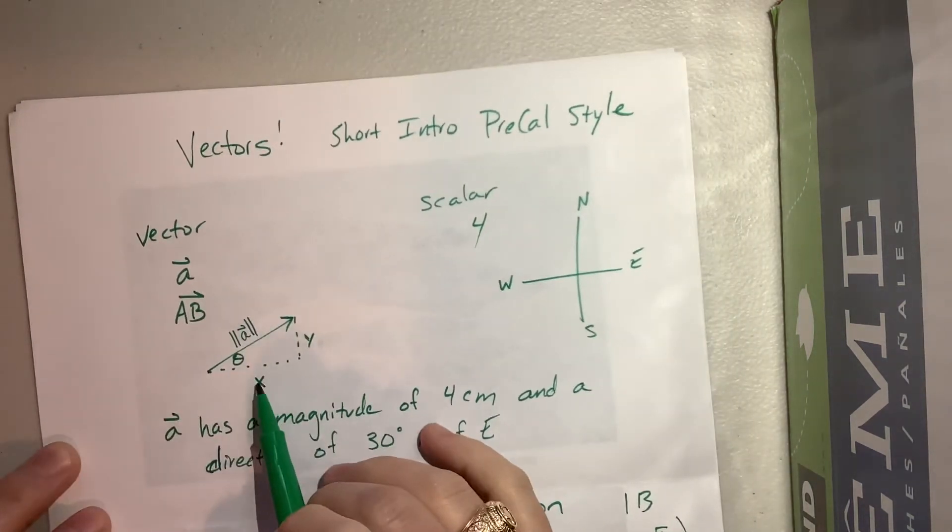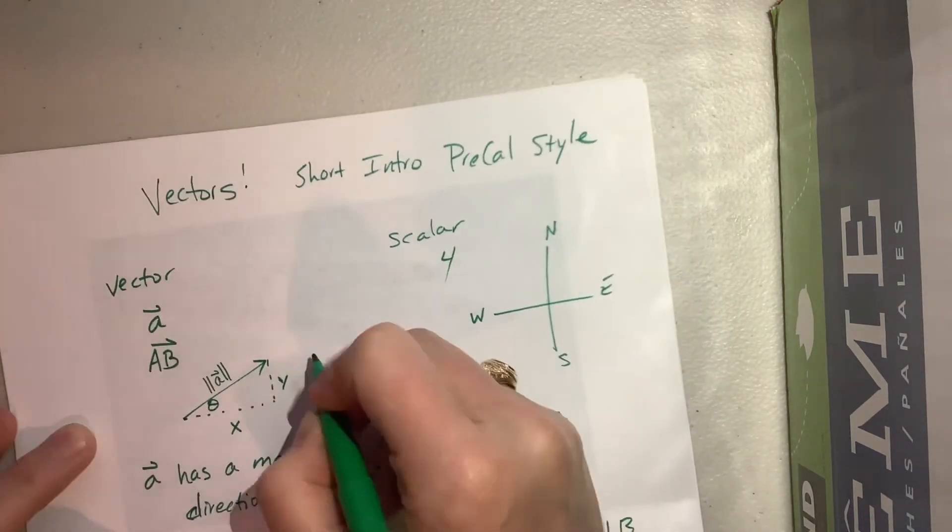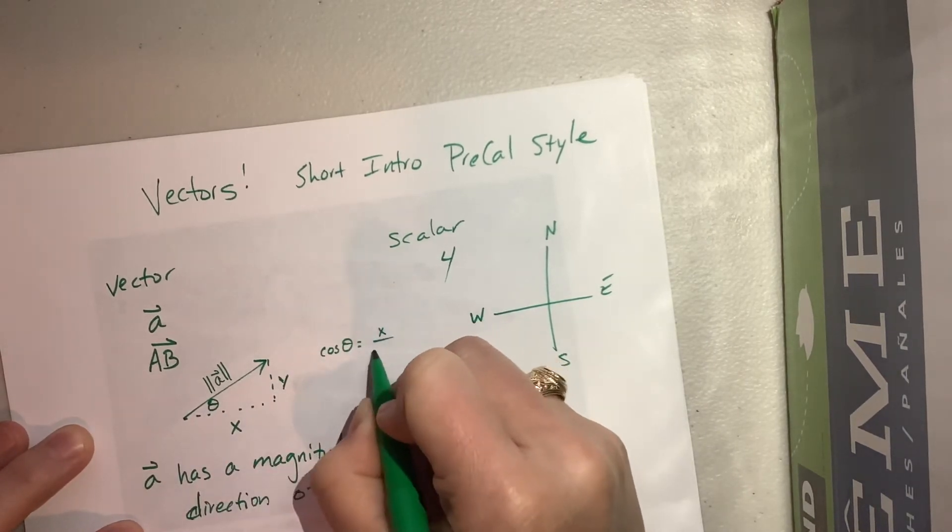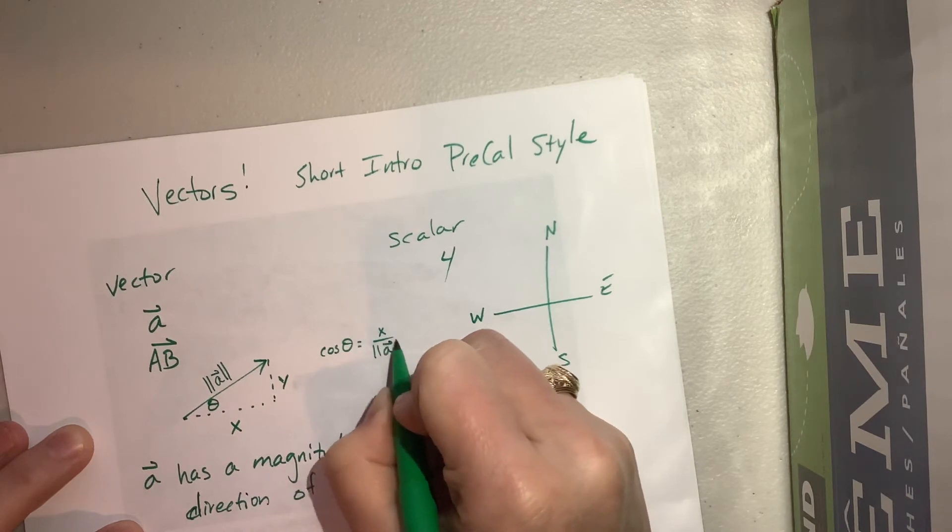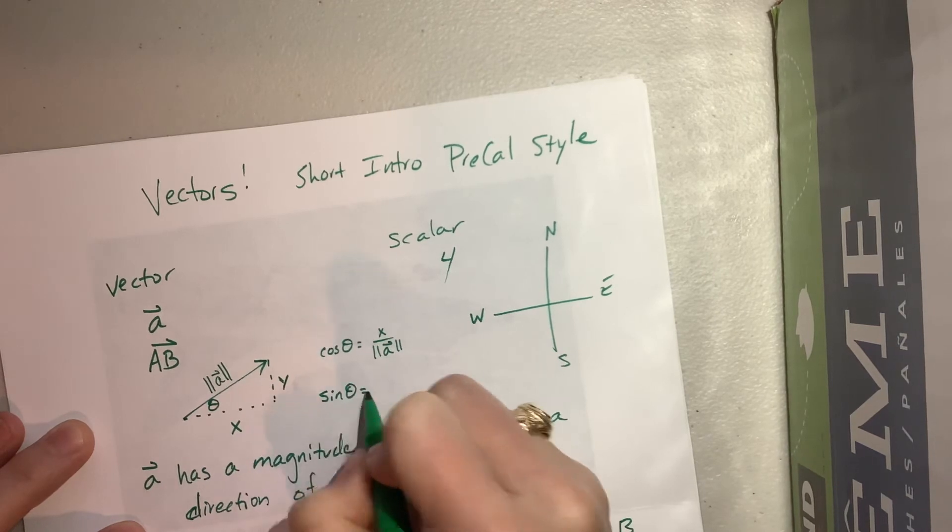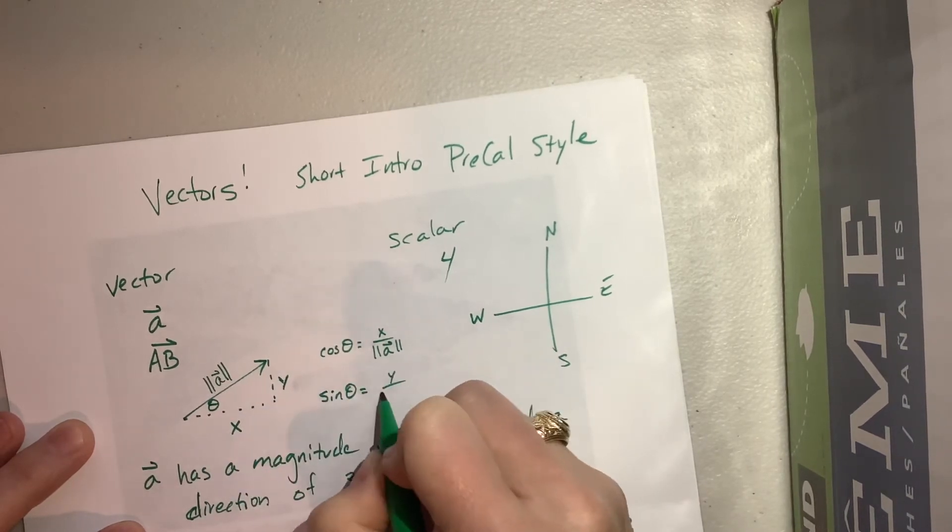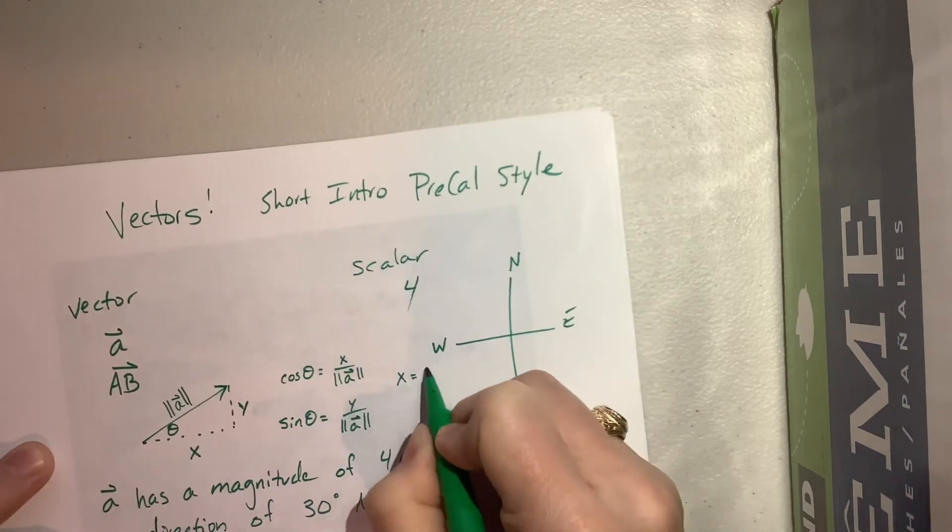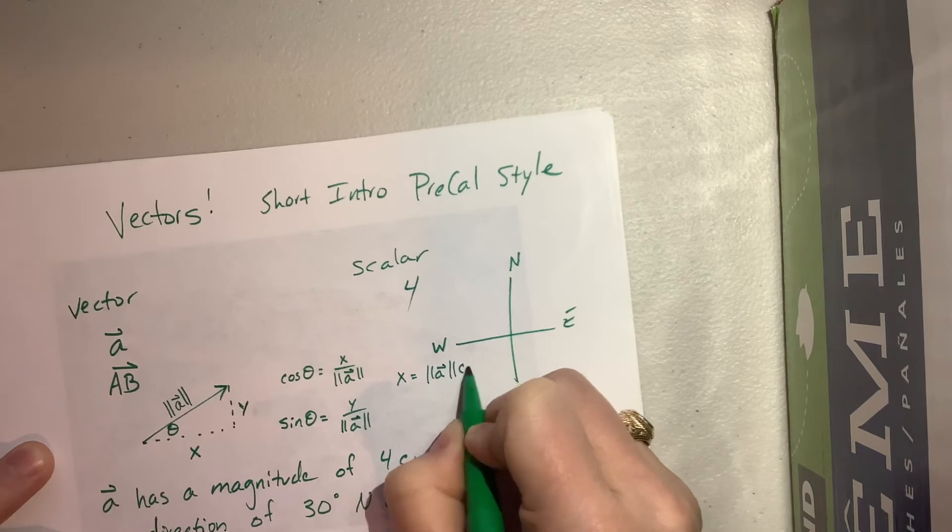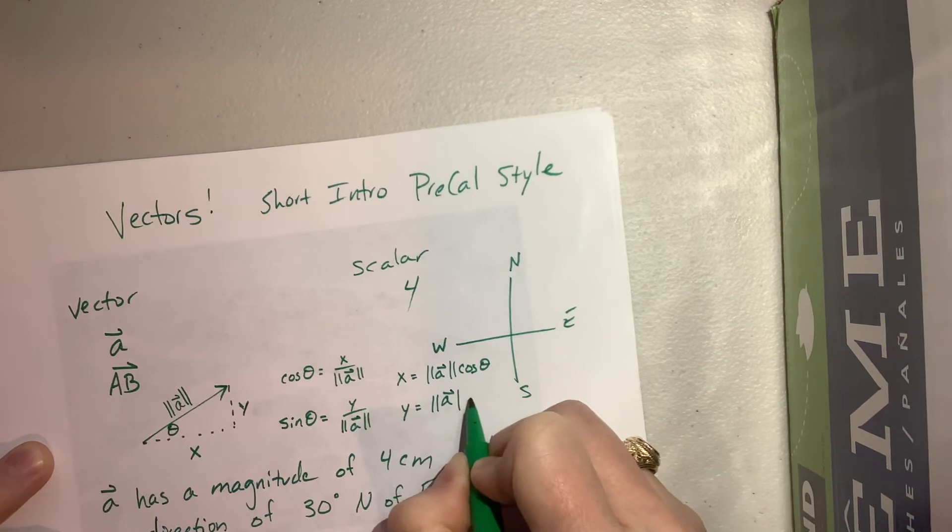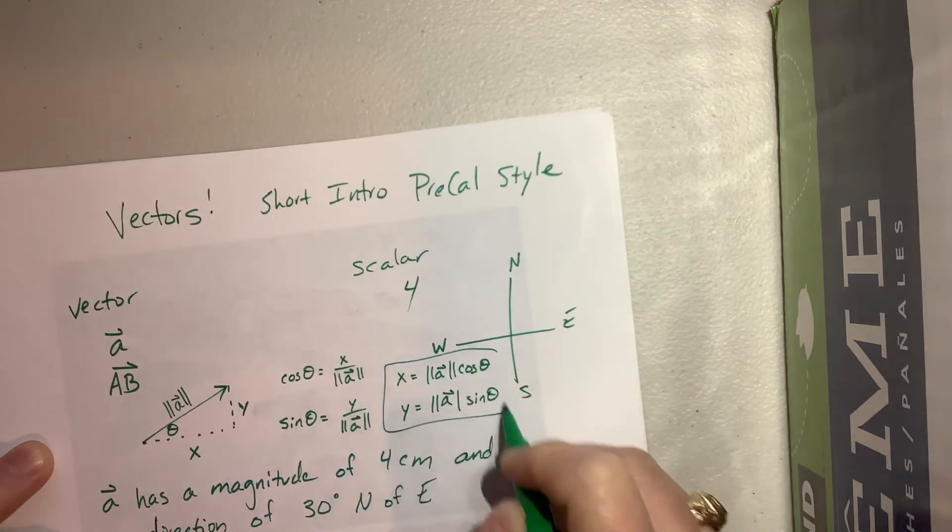So you'll notice that if I come back to this triangle to find x, well we know that cosine of theta is going to be equal to x over the magnitude of a, and we know that sine of theta is going to be equal to y over the magnitude of a. And so what's helpful here is that x is equal to the magnitude of a times cosine of theta and y is equal to the magnitude of a times sine of theta.